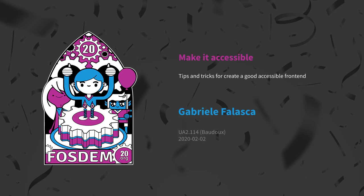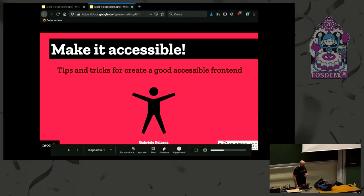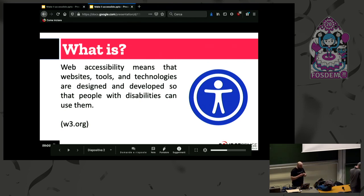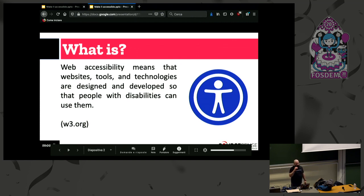Welcome Gabriele, who's going to talk about how to make things accessible. Web accessibility means that websites, software, and technology has to be designed also for people with disability — not only physical but also social and economic.